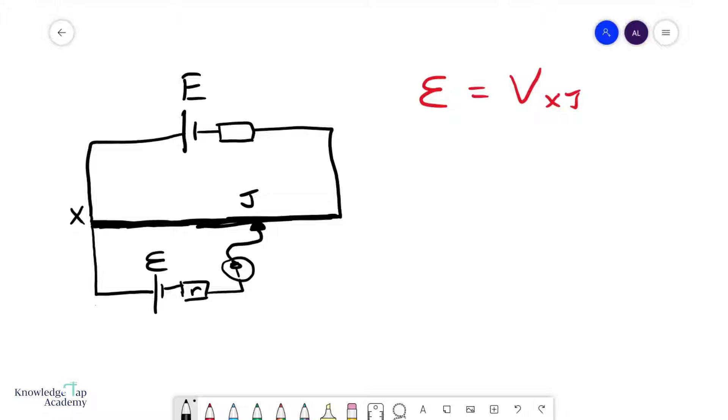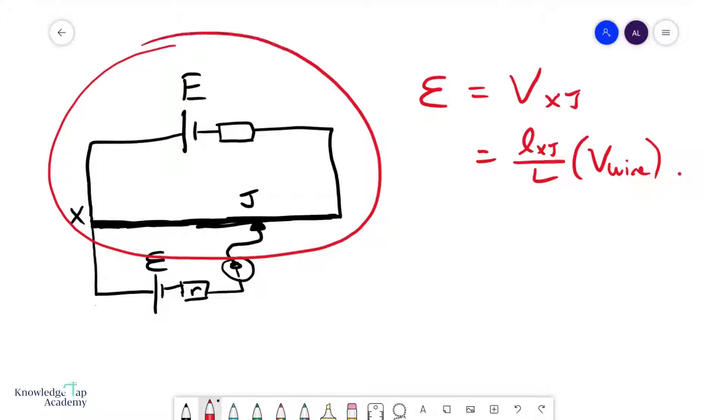We have seen how to do that. The EMF is simply equal to the length Xj divided by the length of the wire multiplied by the potential difference across the wire, which can be found using potential divider principle for the top circuit only. So we have half the problem solved. We have the EMF of the cell.